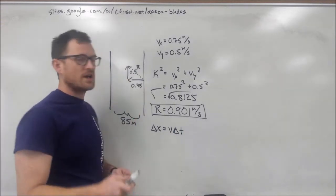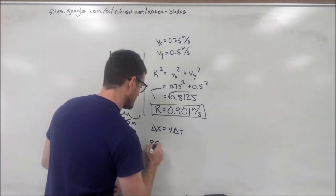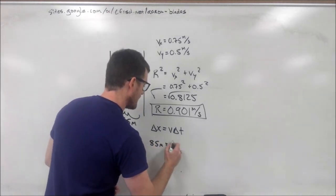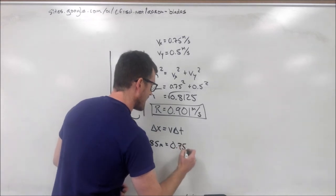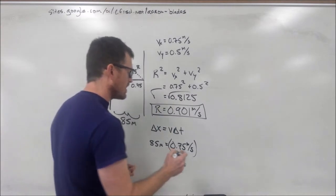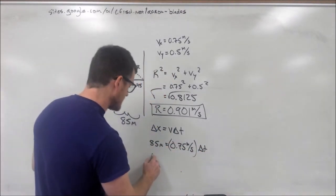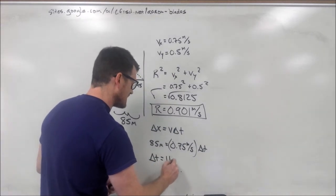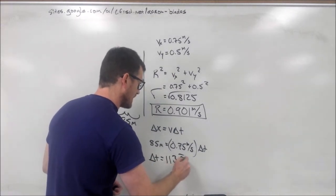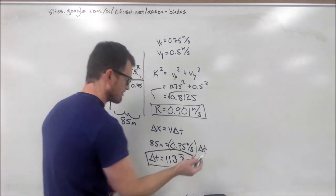So, for this equation, we're going to plug in our 85 meters and our 0.75 meters per second, not the 0.901 that we saw before. When we solve for delta t here, we end up with delta t is equal to 113.3 repeated seconds.